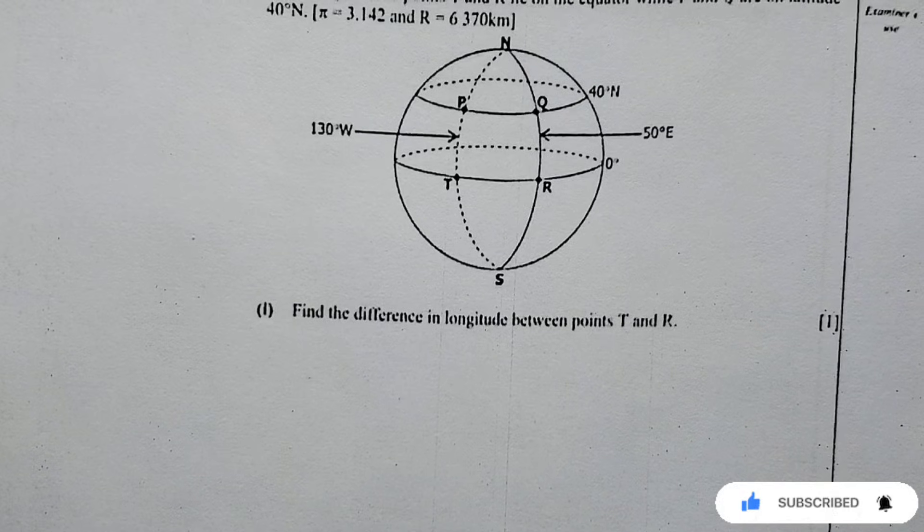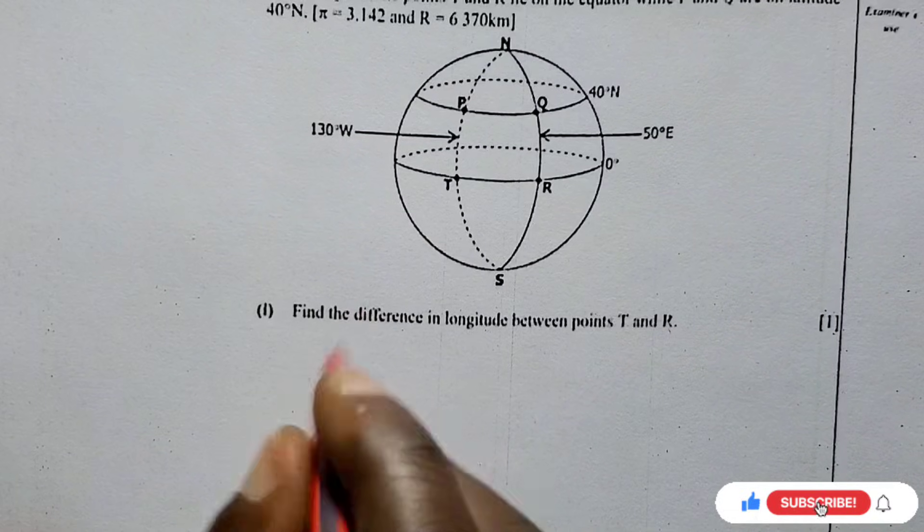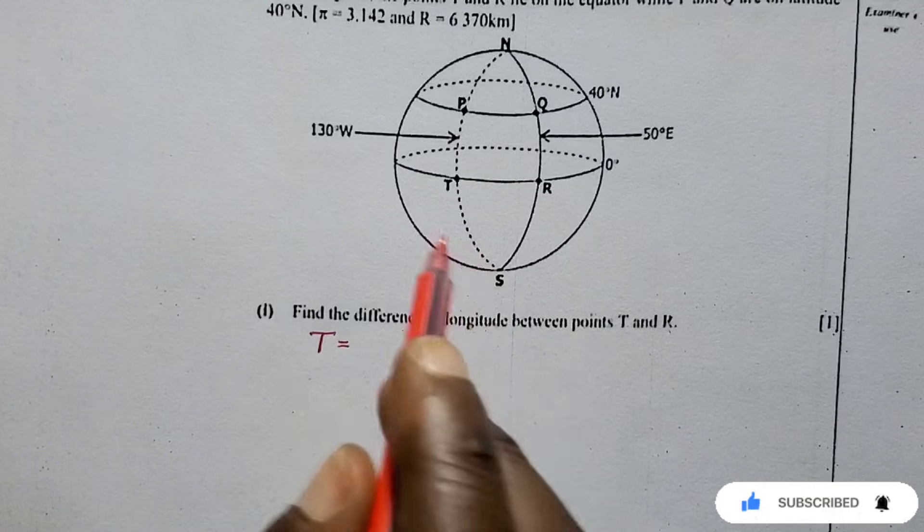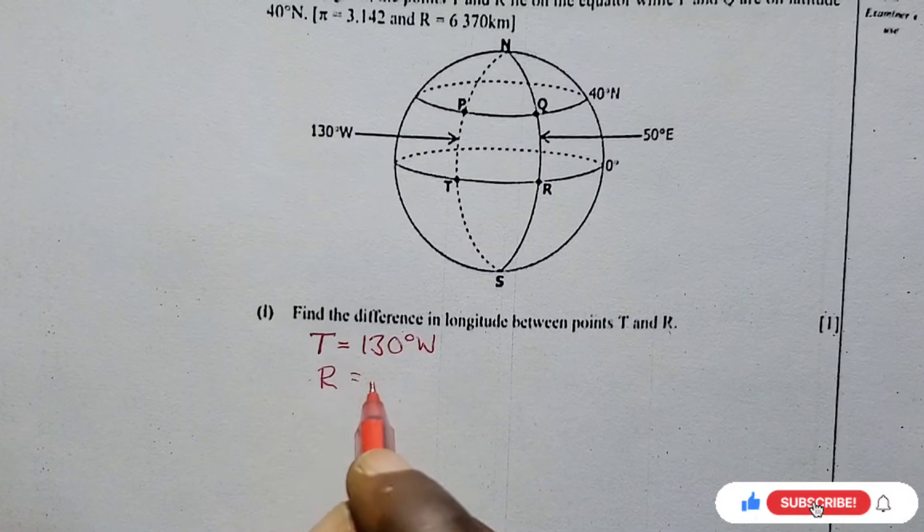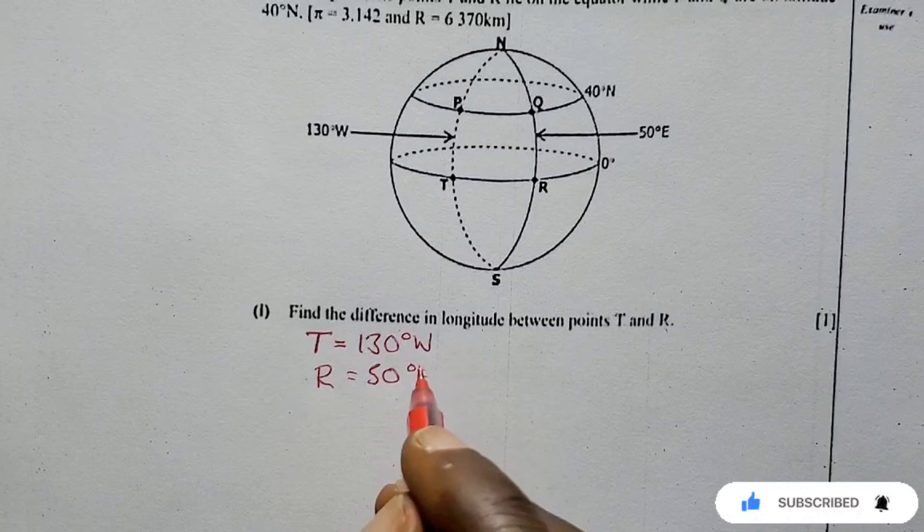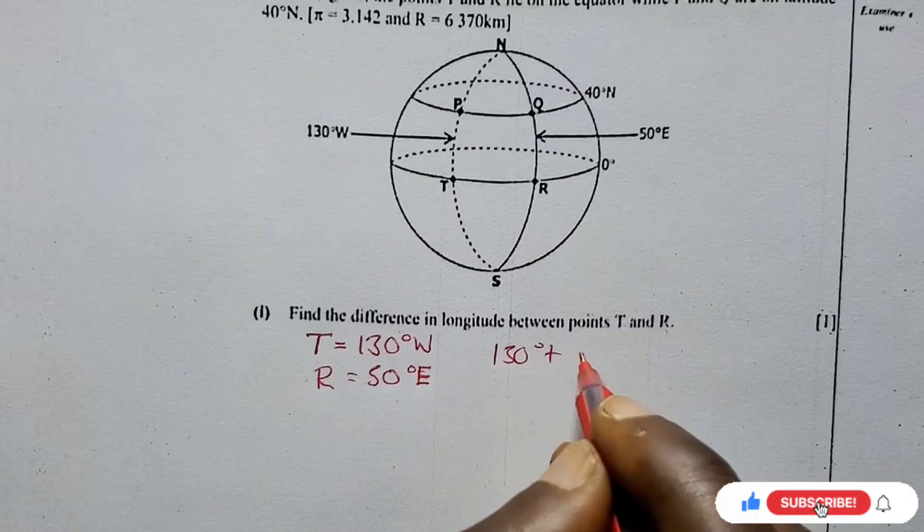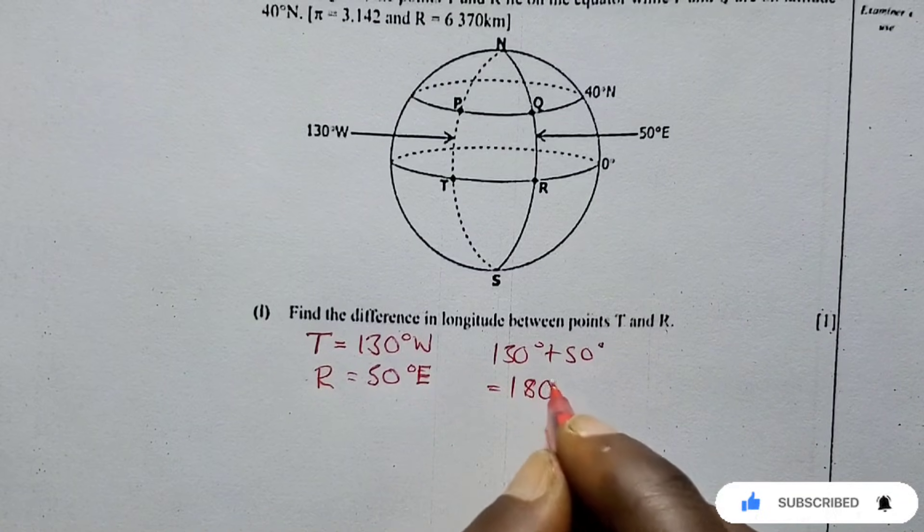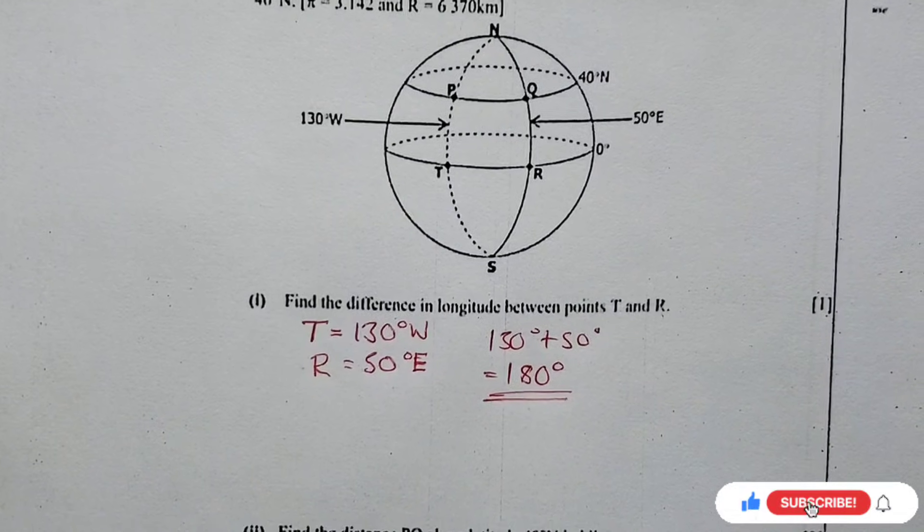The first question is asking us to find the difference in longitude between points T and R. So this is just one mark. T is on longitude 130 degrees west, then R is on 50 degrees east. Different hemispheres you add, same hemisphere you subtract. So here we're going to add 130 degrees plus 50 degrees, which equals 180 degrees. And this is the answer, simple right?